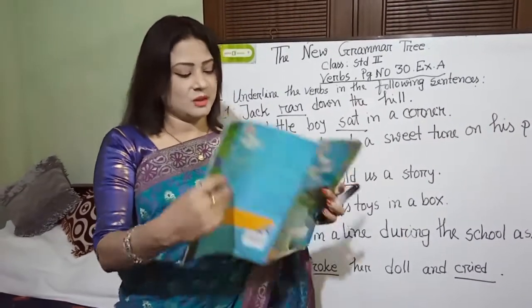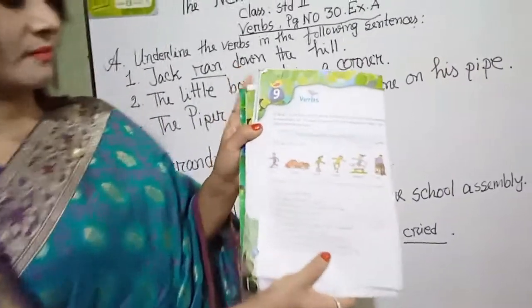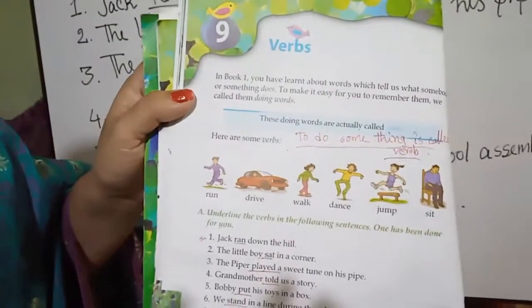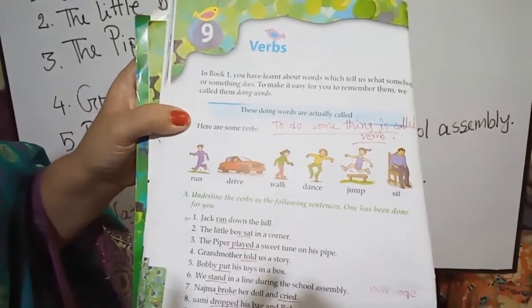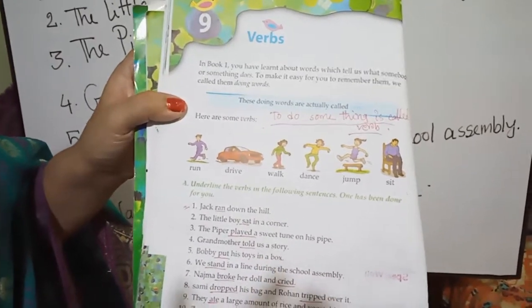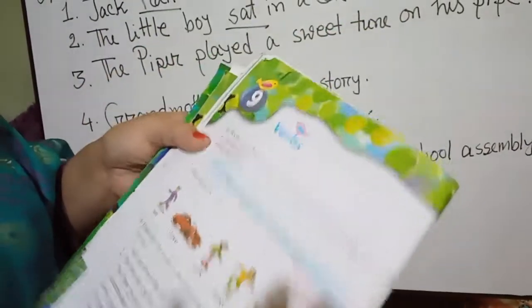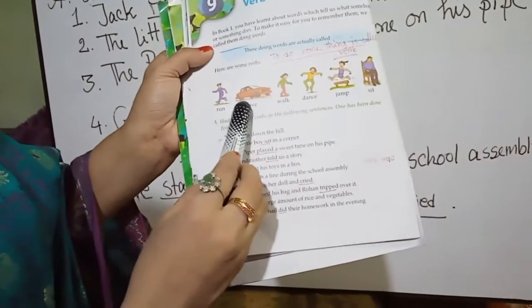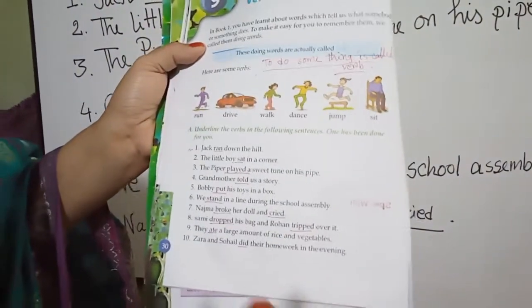Look at the picture. Here are some verbs: run, drive, walk, dance, jump, sit, etc.